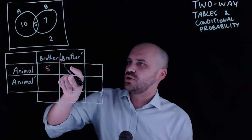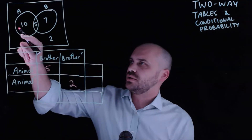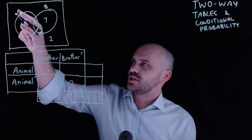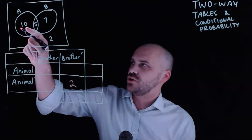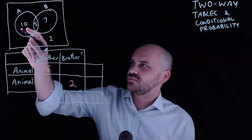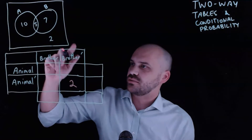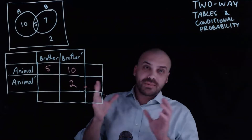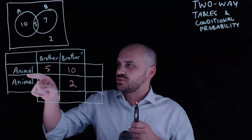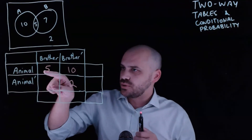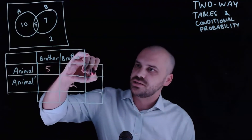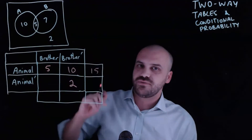An animal but no brother — these are all the people that have an animal in their house but no brother. That's 10. Now that makes sense because the total number of people who have an animal in their house is 15.